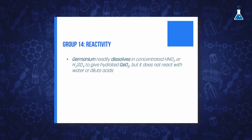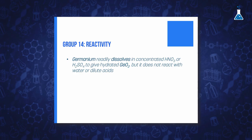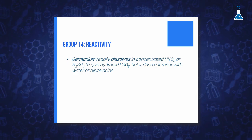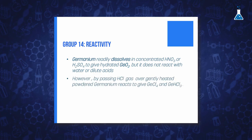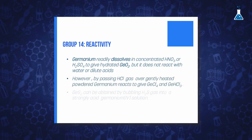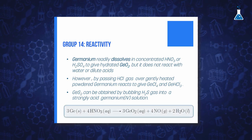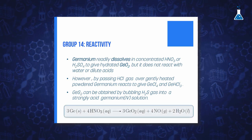Contrarily, germanium forms the dioxide when it reacts with nitric acid and although it does not react with diluted acids and water, it can form germanium tetrachloride and germanium disulfide by reaction with hydrochloric acid and hydrosulfuric acid respectively.